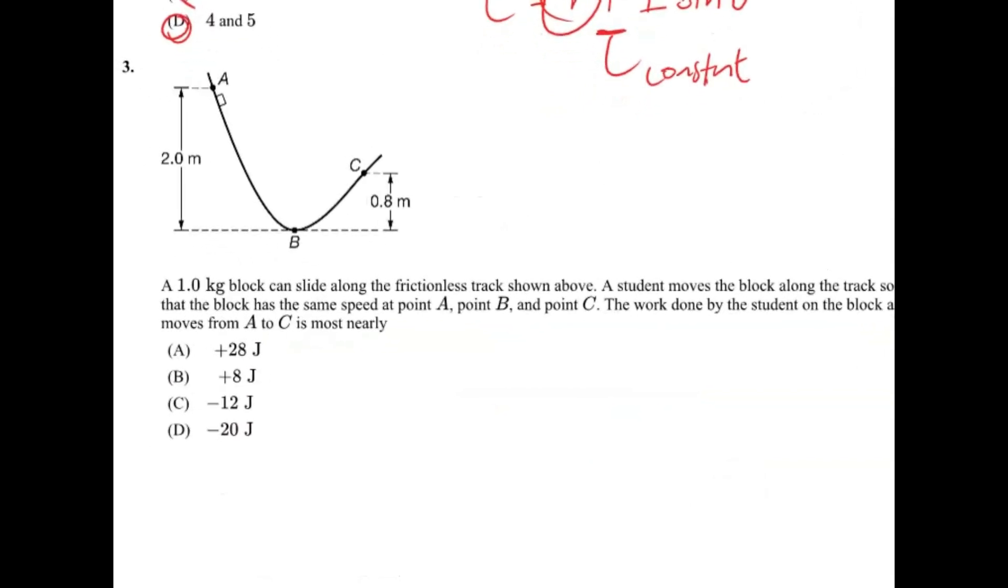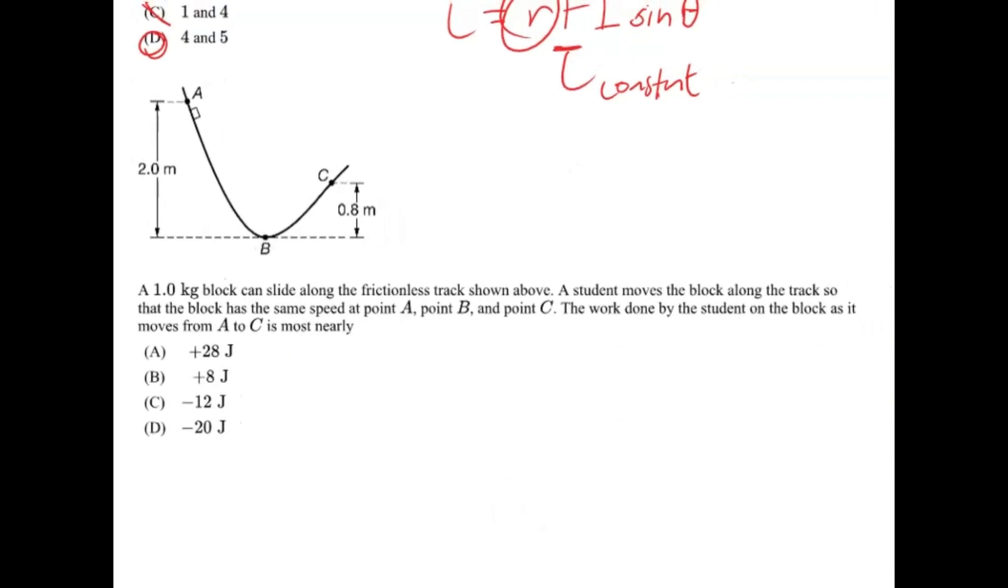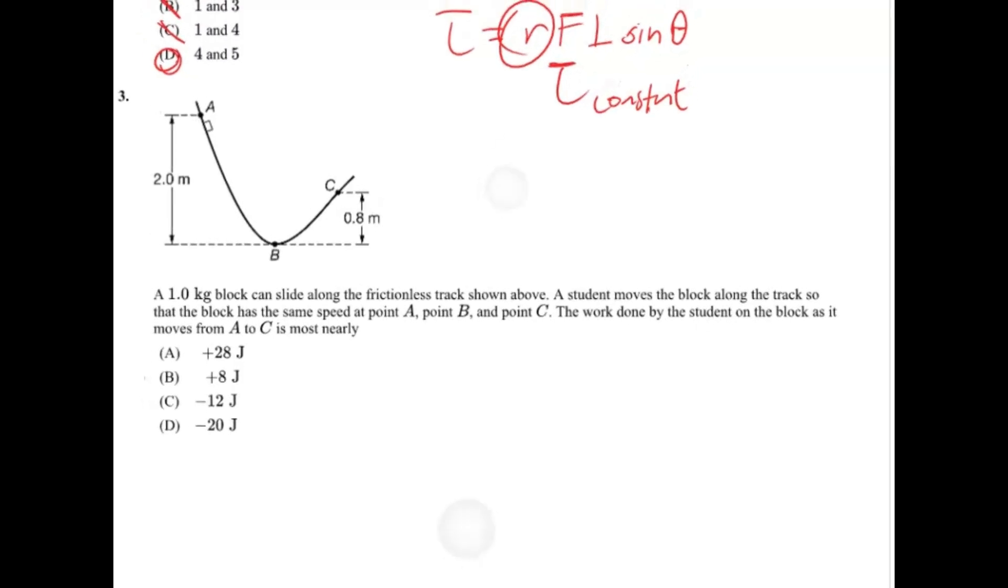Alright, number three. A one kilogram block can slide along frictionless track above as the student moves the block along the track so that the block has the same speed at point A, B, and point C. The work done by the student on the block as it moves from A to C is most nearly what?